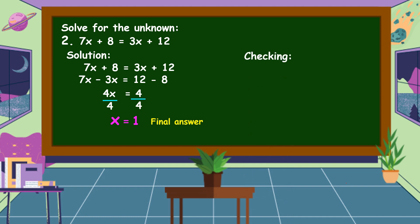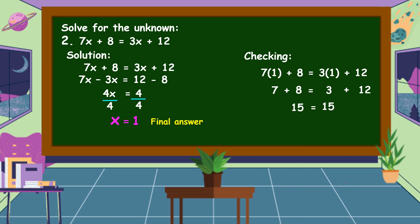Let's check if our answer is correct using the original equation, substituting x equals 1. 7 times 1 plus 8 equals 3 times 1 plus 12. 7 times 1 is 7; 7 plus 8 equals 15. 3 times 1 is 3; 3 plus 12 equals 15. Both sides equal 15, so the equation is balanced and x equals 1 is correct.